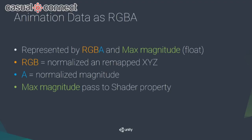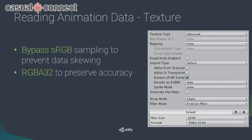Because this texture stores data — not color — when you import it into Unity you need to bypass sRGB sampling to prevent data skewing. The texture format should be RGBA32 to preserve accuracy. Note: this talk was originally meant for one hour, not 20 minutes, so I'll move a bit faster.